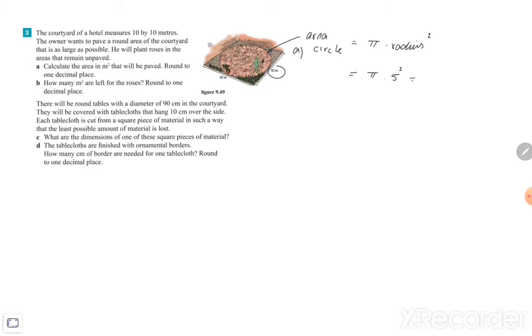Exercise B: How many square meters are left for the roses, rounded to one decimal place? Well, the whole courtyard is 10 by 10 meters, so what is left?